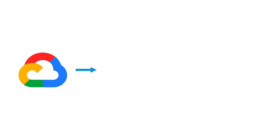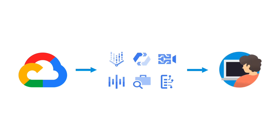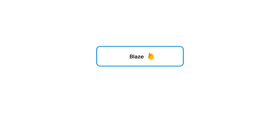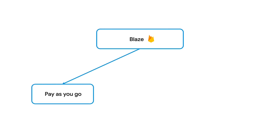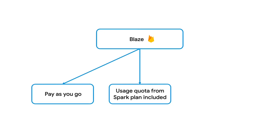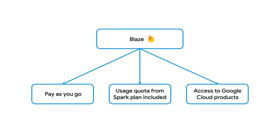All projects in the Blaze plan have a cloud billing account attached to them. This enables these projects and the apps registered under them to access more services and higher usage levels. Once you switch to the Blaze plan, you switch to a pay-as-you-go pricing model, which means your project will still have the usage quotas for paid Firebase products and you will only pay for additional usage. If your project stays within the quotas, you won't see any billing at the end of the month. You'll also gain access to paid Google Cloud products and features like Cloud Run and BigQuery Streaming for Analytics.